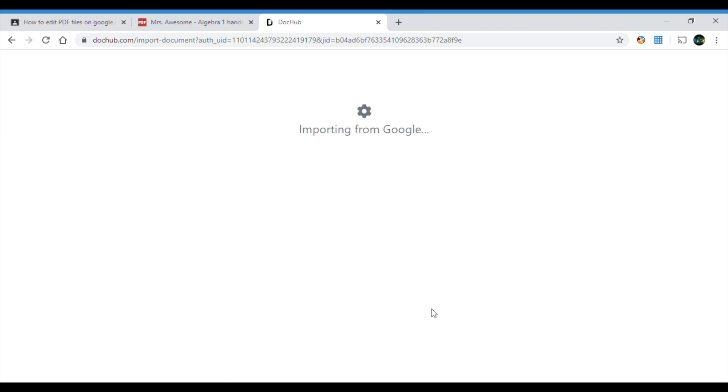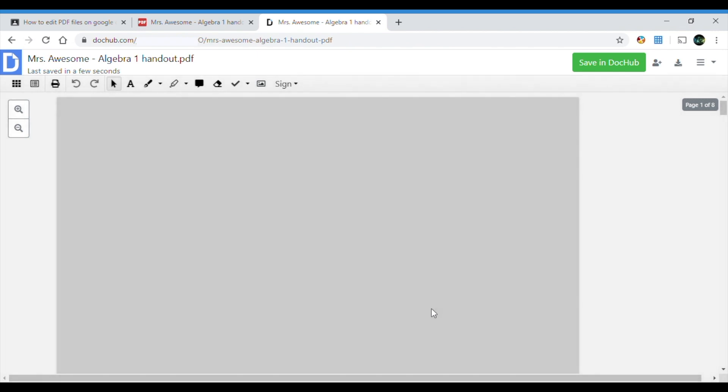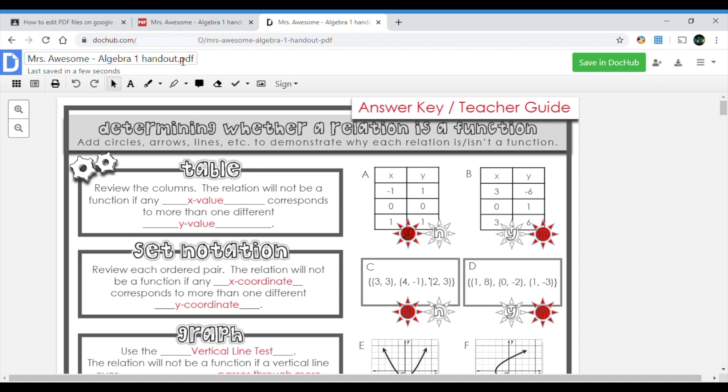Now the magic begins. So let's have some fun with our Algebra 1 assignment. So the first thing I'm gonna do is I'm gonna go ahead and rename my file. I'm gonna take out all of the Algebra 1 handout. I will leave my name Mrs. Awesome and I'm gonna put the day that it's due. March 30th. Please make sure you capitalize the month. And you're gonna click enter. So as you can see it already saved the title of your assignment.